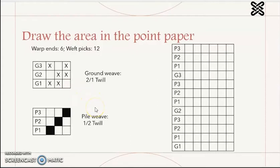For the pile weave, we use 1/2 twill, and we use a black block to represent it. When you see the black block, it means the pile weave is under the warp end, which means the warp is under the ground and the pile weave.